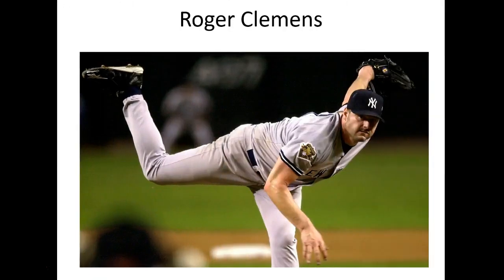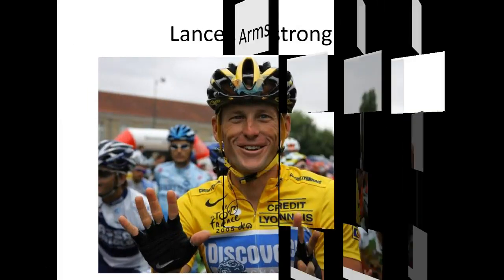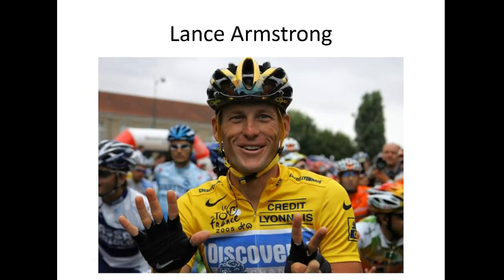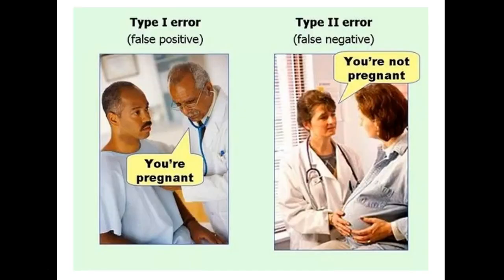Famous Type II errors would be cases with doping among sports, different athletes where they were suspected of using drugs but allowed to continue playing. Roger Clemens and probably one of the most famous recent ones would be Lance Armstrong. And they actually did use drugs.